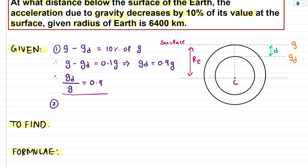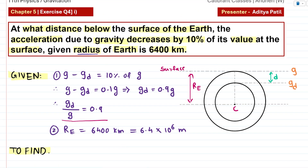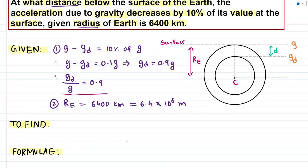The second quantity given in the question is the radius of the earth. We represent the radius of the earth with the symbol RE, and this radius is 6400 kilometres. Since kilometres is not an SI unit, we convert it: 6400 kilometres becomes 6.4 × 10⁶ metres. We are required to find the distance d below the surface where the decrease in gravity is 10%.